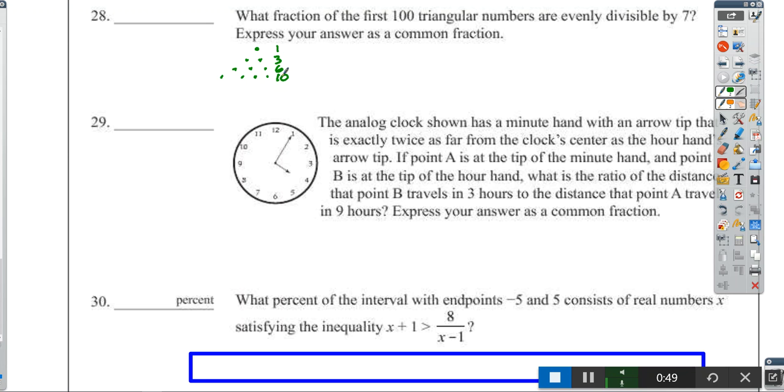A triangular number is a number when we follow this pattern. 1 makes a triangle, 3, 6. Not only does it make a triangle, it makes a really great configuration for bowling. Notice how I'm adding 2, adding 3, adding 4.